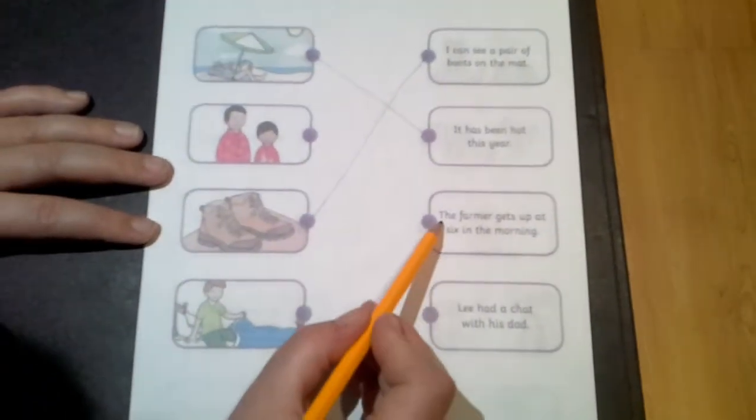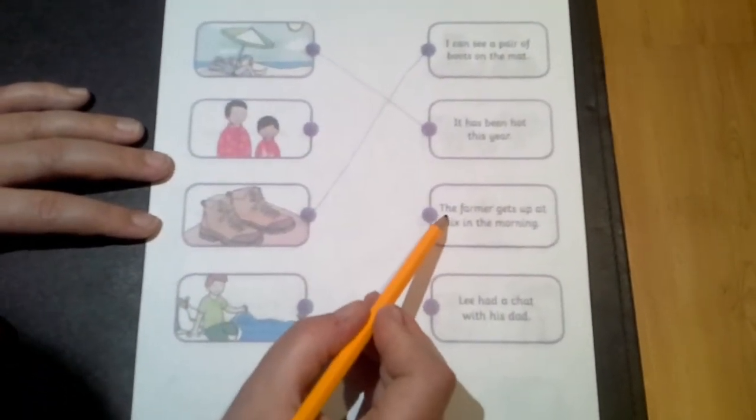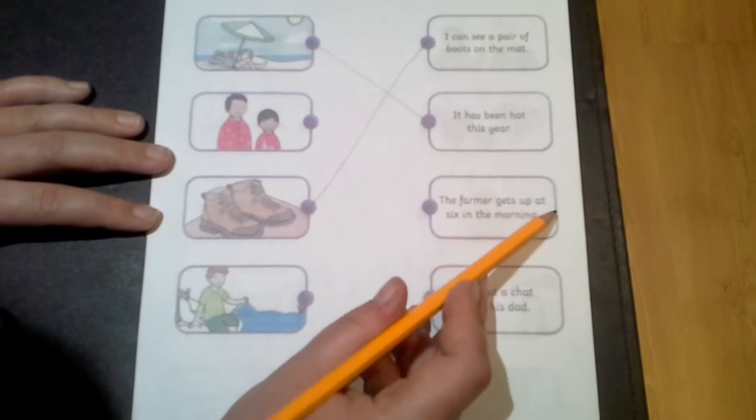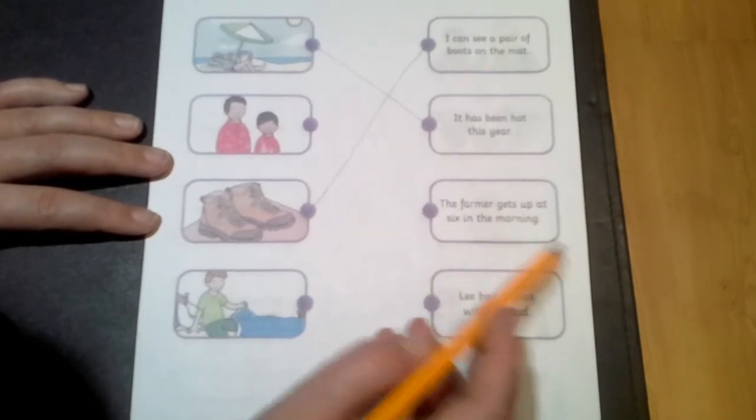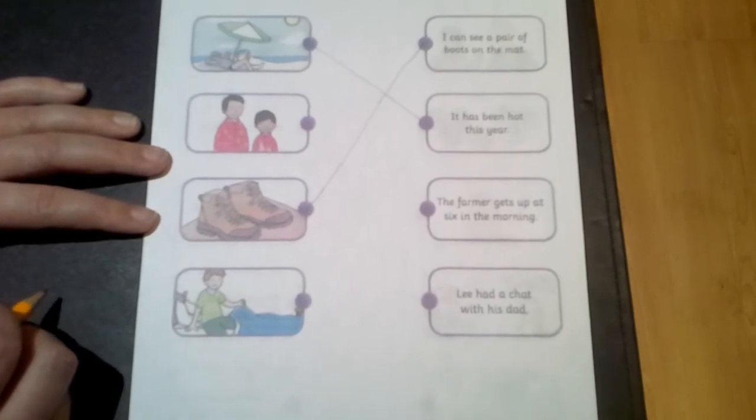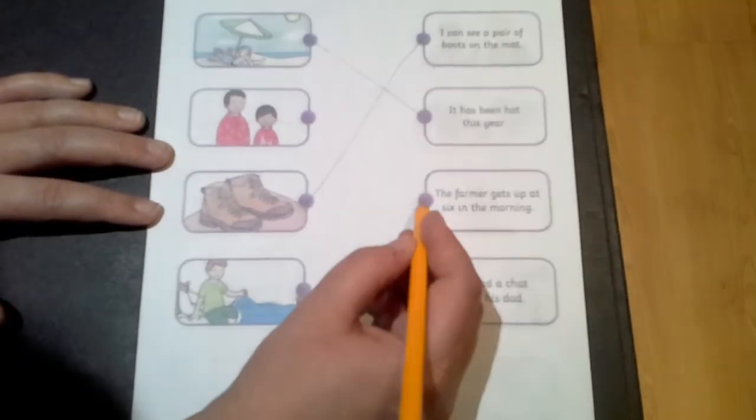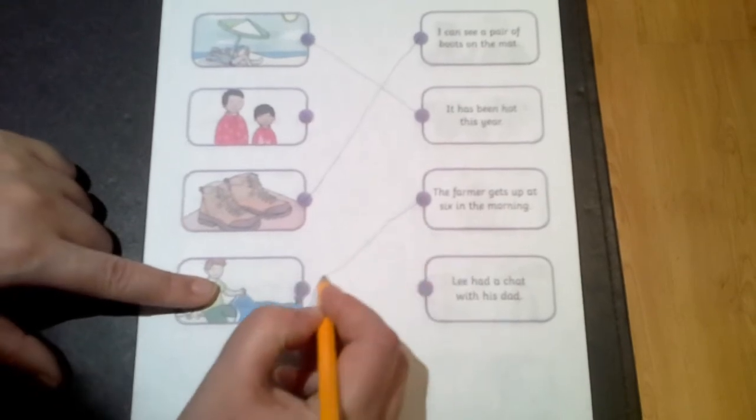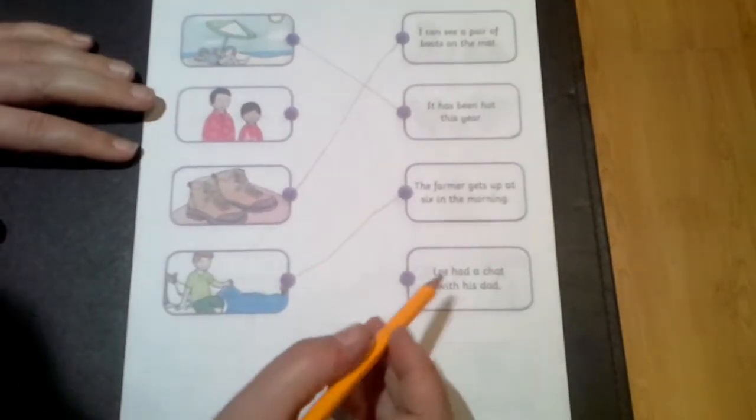Let's read the next one, read with me. The farmer gets up at six in the morning. The farmer gets up at six in the morning. Which picture is that children? That's right, this one down here.